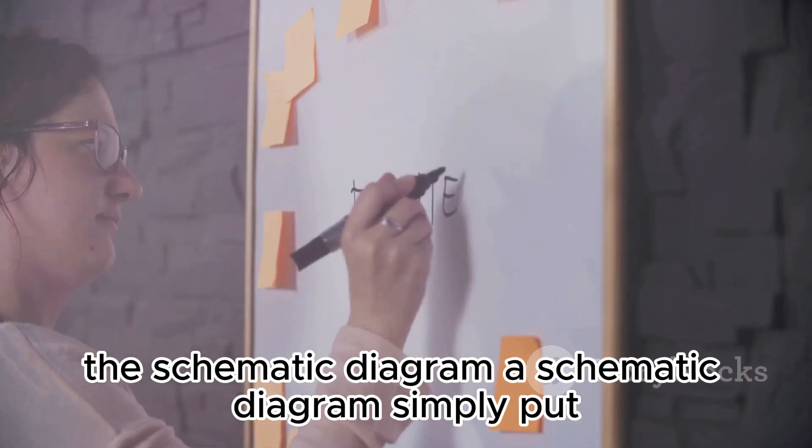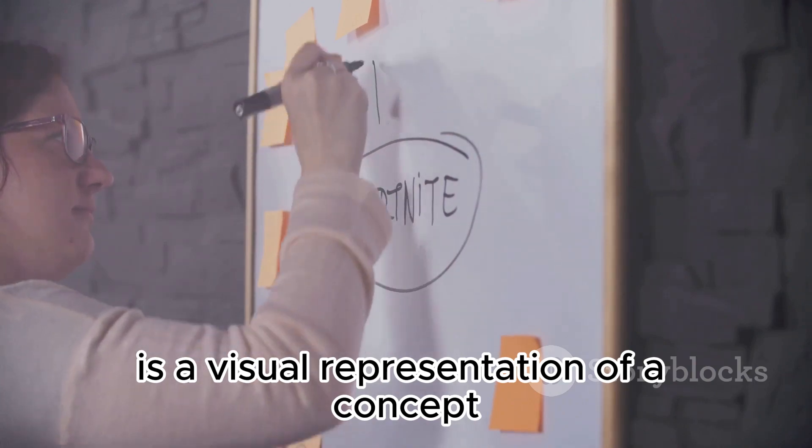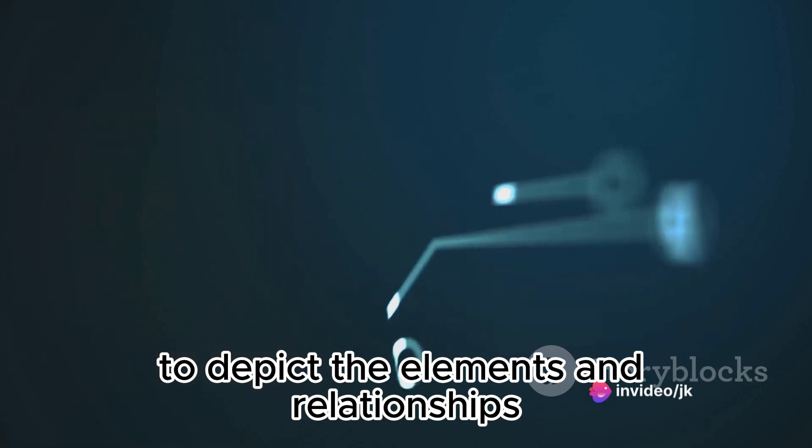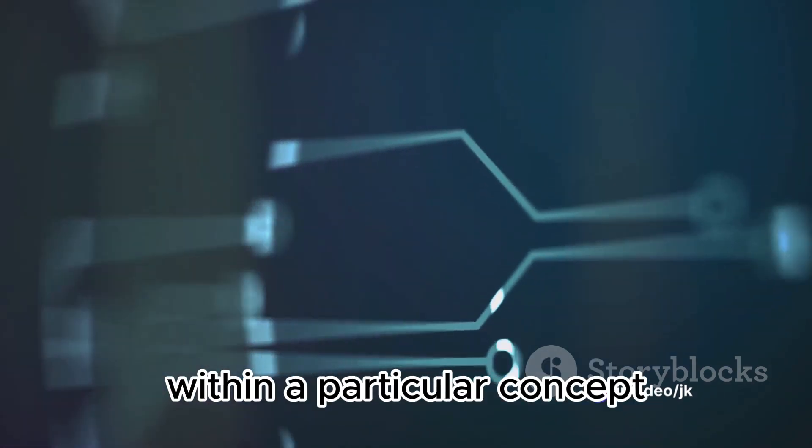A schematic diagram, simply put, is a visual representation of a concept, theory, or system. It uses symbols, shapes, and lines to depict the elements and relationships within a particular concept.